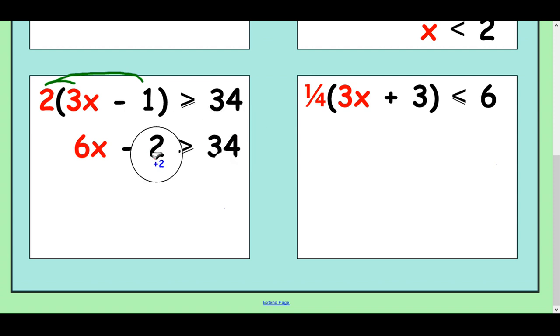And it's greater than or equal to 34. Now, because we've got a takeaway 2 here, I'm going to add it to both sides. That's going to give me 6x is greater than or equal to 36. Divide by 6, both sides to finish, you'll get x is greater than or equal to 6.